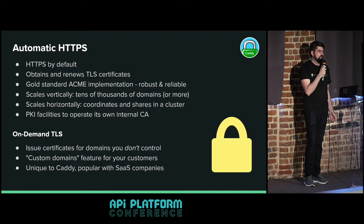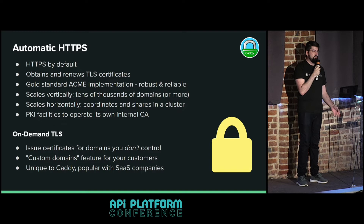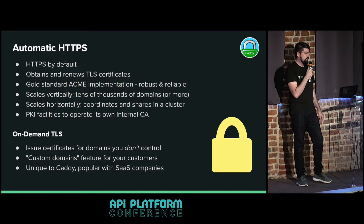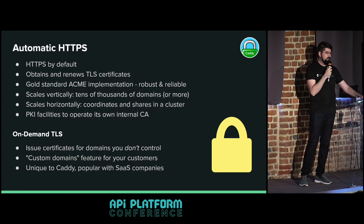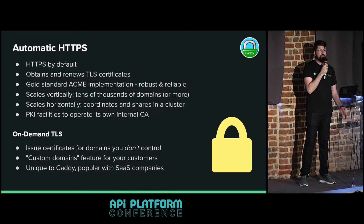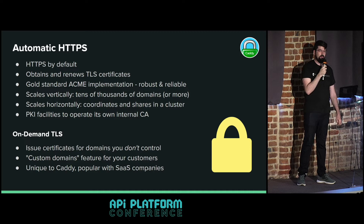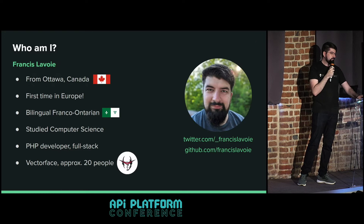Caddy can scale vertically with tens of thousands of domains, and horizontally by running multiple instances that coordinate in a cluster - one instance can start the certificate issuance process and another can finish it, as long as they share the same underlying storage. Caddy also has a PKI app that lets it act as its own CA, so you can self-sign certificates to test your app with HTTPS on localhost during development. A feature unique to Caddy is on-demand TLS, which allows issuing certificates for domains you don't control - for example, customers who want to use their own domain for your white-labeled app.